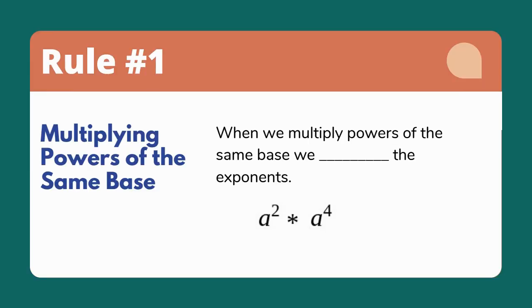Let's start by doing a quick rapid-fire review of all of the exponent rules we've learned so far. So rule number one, when we multiply powers of the same base, we add the exponents. That means a to the second power times a to the fourth power becomes a to the sixth power.